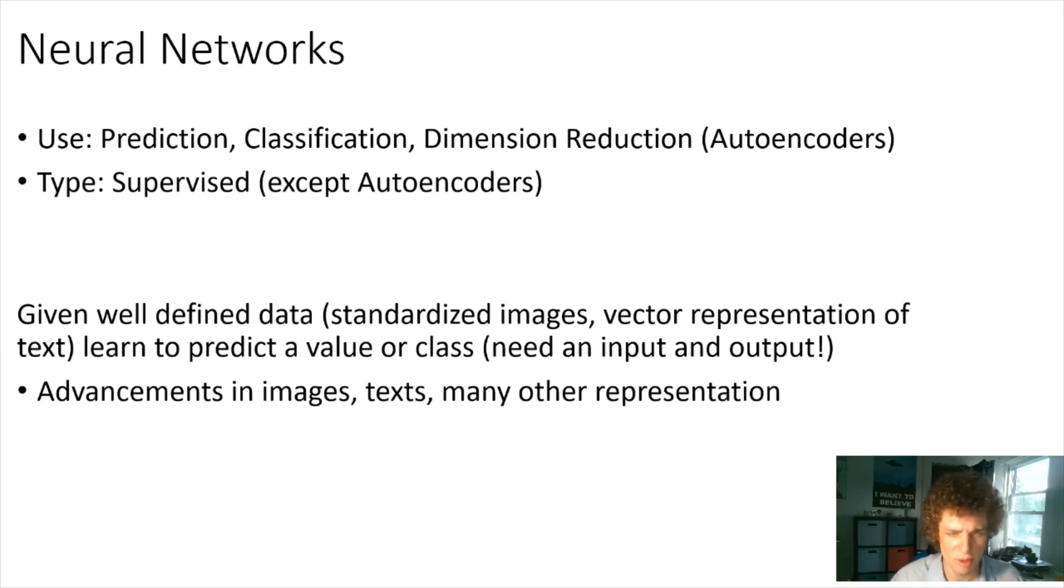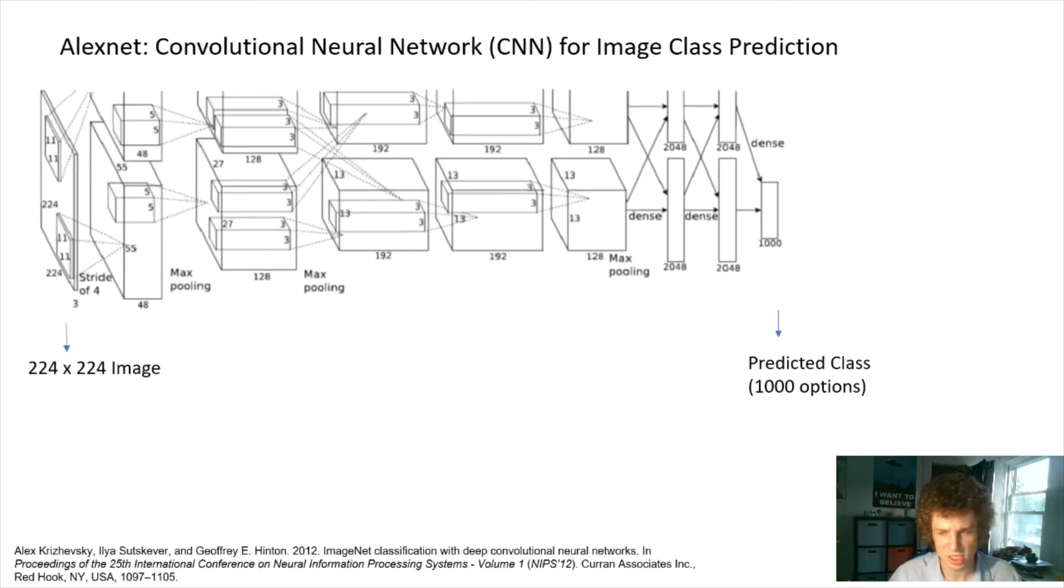This is from a very famous neural network paper called AlexNet. I know it's a complicated picture, but they start out with a 224 by 224 by 3 RGB image. They're predicting each of these images as one of 1,000 options. They have a well-defined output as the 1,000 options and the input as size 224 by 244, with a bunch of stuff between. You can see how this would be supervised because we're given some label and we use that label to learn all these weights through the entire network.